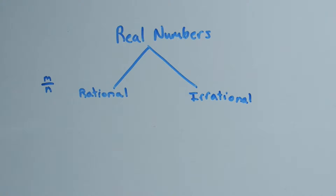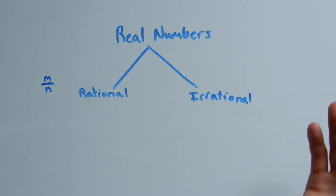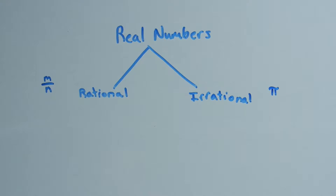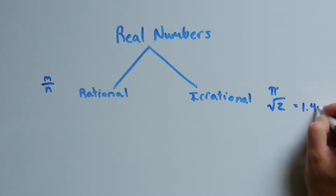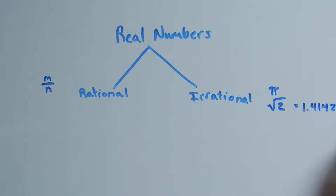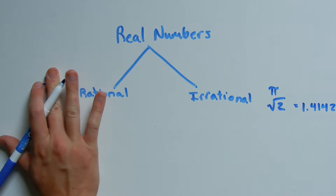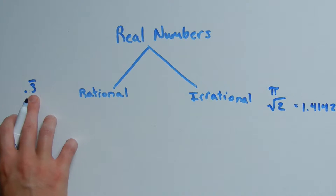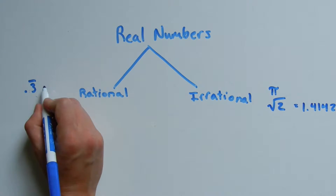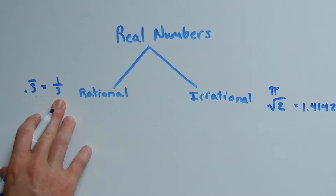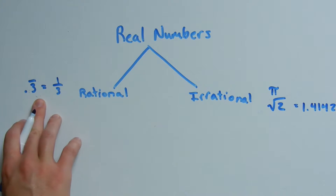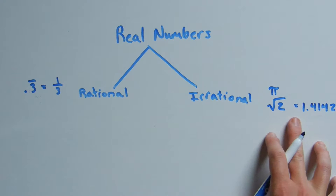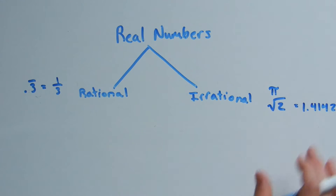Irrational numbers are decimals that go on forever and ever — like pi, which is 3.14159265 and keeps going. Also the square root of 2, which is 1.41421 and keeps going. Over in the rational category, we also have 0.3 repeating. Even though it goes on forever, there is a pattern to it, so it's rational because we know 0.3 repeating can be represented as one third. For pi and the square root of 2, there is no pattern to the decimals, therefore they are irrational.